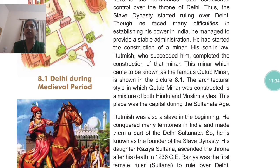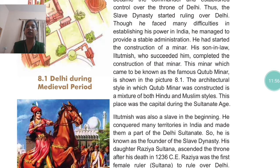The architectural style in which Qutub Minar was constructed is a mixture of both Hindu and Muslim styles. This place was the capital during the Sultanate Age. Altomish was also a slave in the beginning. He conquered many territories in India and made them a part of the Delhi Sultanate, and he is known as the founder of the slave dynasty.